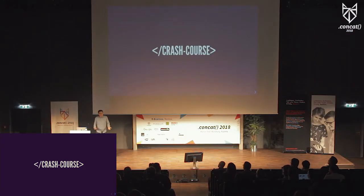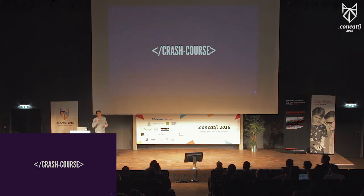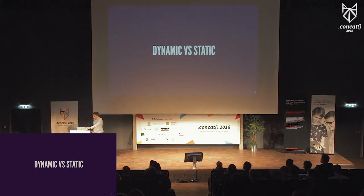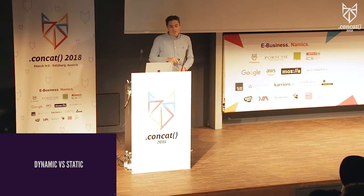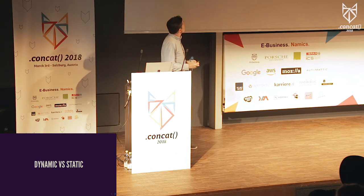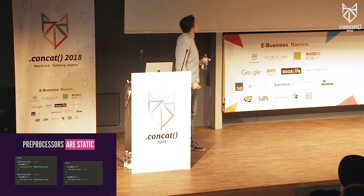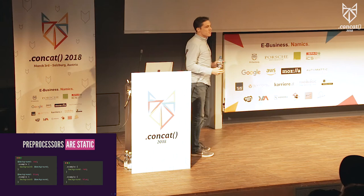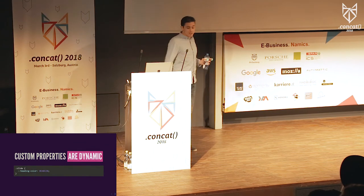That's probably all you need to know about custom properties for today — there's more about fallback values and assigning custom properties to other custom properties, but I'll skip that. The most significant difference between preprocessor variables and custom properties is how they're scoped. We can refer to variables as either statically or dynamically scoped. Preprocessor variables are statically scoped — we can change the value at different points in compilation, but when rendered to CSS, those variables are gone and have to be static values.